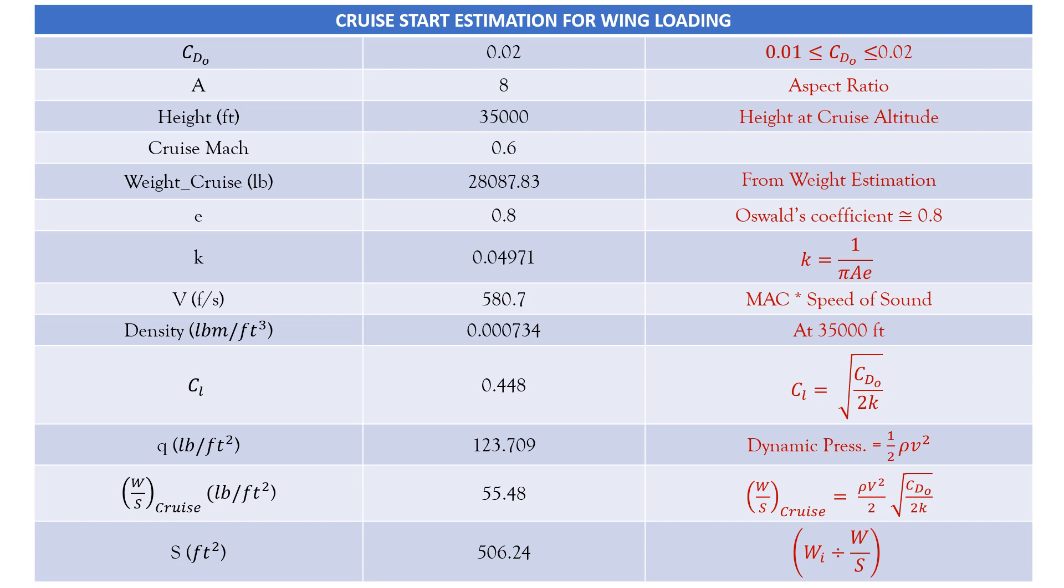Let's begin with our estimation process. Since cruise is the most important phase, we will start with cruise start estimation. So the parameters at the start of the cruising phase: initially we have a CD0 value and we have considered a value of 0.02, and the CD0 value varies from 0.01 to 0.02. A is an aspect ratio. This can be considered from previous literature or the aircrafts taken for our literature study, and an approximate aspect ratio can be selected.